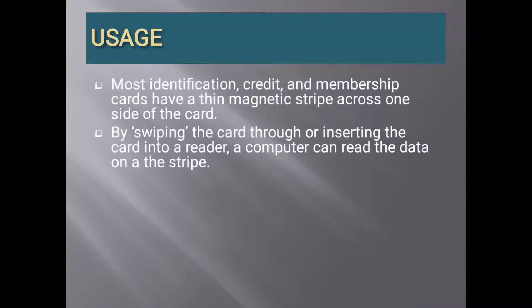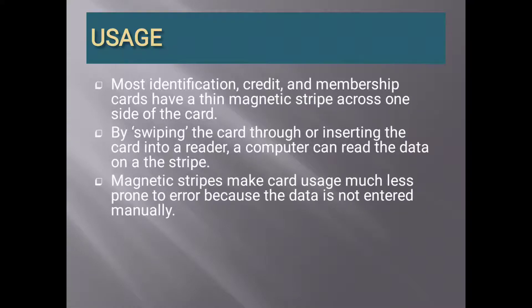Next is the usage of magnetic stripe card. Most identification, credit, and membership cards have a thin magnetic stripe across one side of the card. By swiping the card through or inserting the card into a reader, a computer can read the data on the stripe. Special computers such as automated tailor machine are made to access it. Magnetic stripes make card usage much less prone to error because the data is not entered manually.